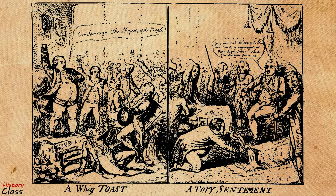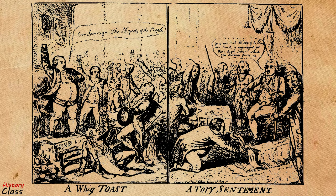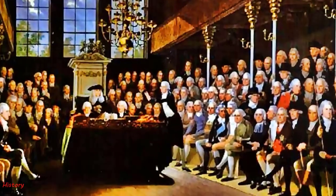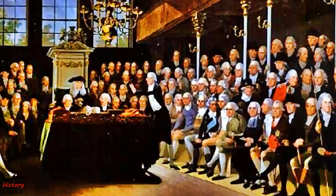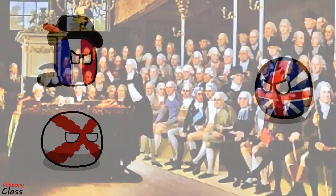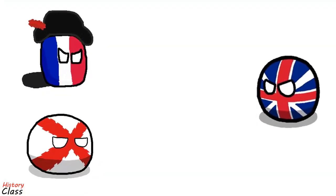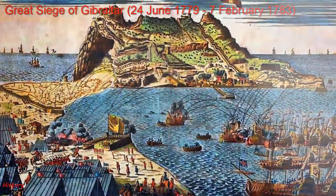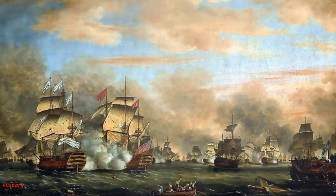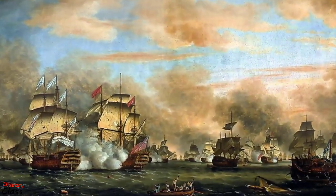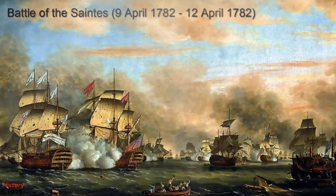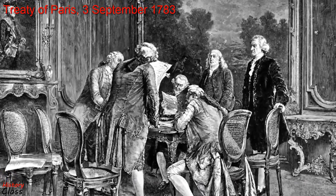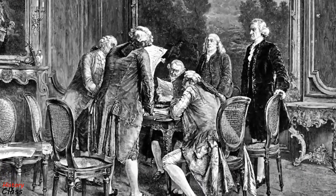Whigs in Britain had long opposed the pro-war Tory majority in Parliament, but the defeat at Yorktown gave the Whigs the upper hand. In early 1782 they voted to end all offensive operations in North America, but the British war against France and Spain continued, with the British decisively defeating both during the Great Siege of Gibraltar. In addition, Britain inflicted several naval defeats upon the French, most decisively in the Battle of the Saints in the Caribbean in April 1782. On 3 September 1783, the combatants signed the Treaty of Paris, ending the war.